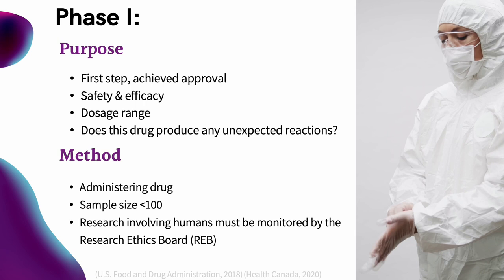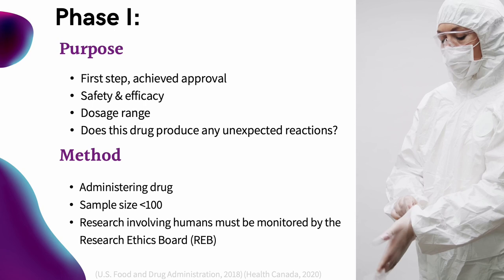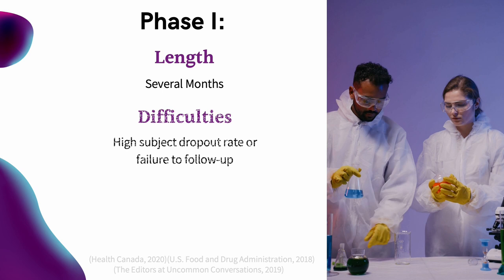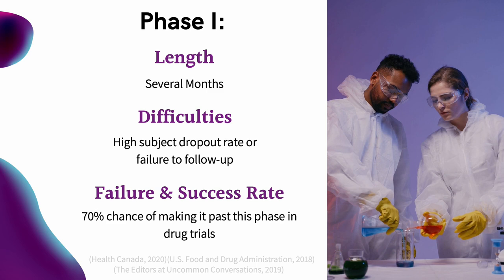The method used in Phase 1 is the administration of the drug to a typical sample size of less than 100 healthy low-risk subjects, monitored through screening, imaging, and sampling. The FDA reports that Phase 1 takes an average of several months to complete. Some difficulties associated with this phase include a high subject dropout rate, failure to follow up, or issues with trial design that need modification. The approximate success rate is 70% for drug trials.